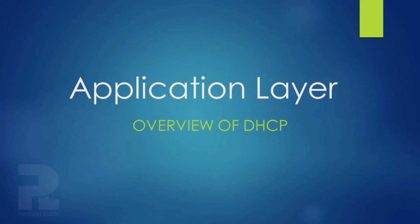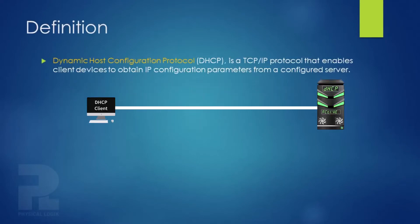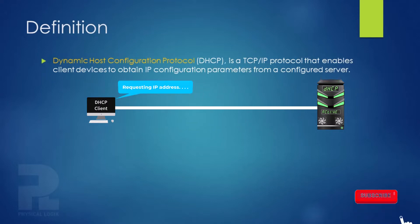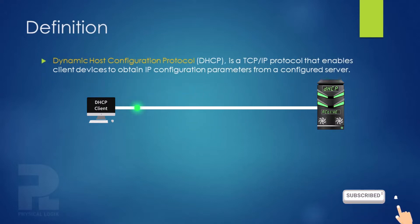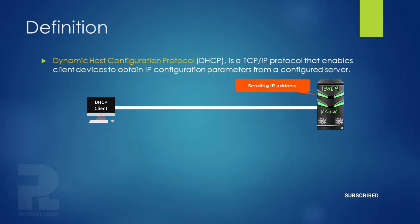Hello guys, we'll talk about the overview of DHCP. DHCP, meaning Dynamic Host Configuration Protocol, is an application layer protocol that enables client devices to dynamically obtain IP addresses and other network parameters from a configured server.